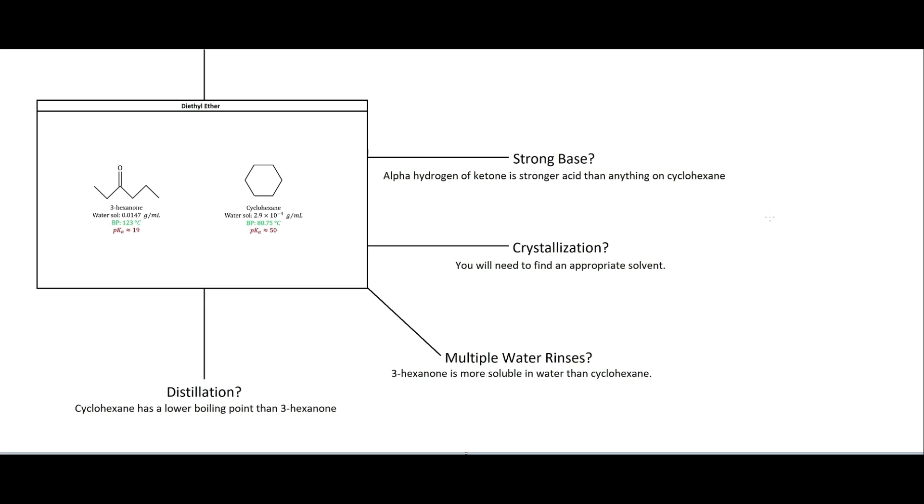And so now the idea is how to separate these two things because we see that well this is a little bit more water soluble but it's still not very water soluble. This is very not water soluble. So there are a few things that we can think of to try to use. We could maybe use a very strong base which could deprotonate one of these alpha carbons on here and make it charged and do a separation that way. We could maybe think of doing a crystallization. So we would need to find an appropriate solvent for that. We could do multiple water rinses. Like I said 3-hexanone is more water soluble than the cyclohexane. But you're going to end up getting a very dilute amount of your 3-hexanone doing that. You could maybe do a distillation so the cyclohexane has a lower boiling point than the 3-hexanone. But the point is there are multiple things you could consider trying to do if you wanted to try separating those things from each other.